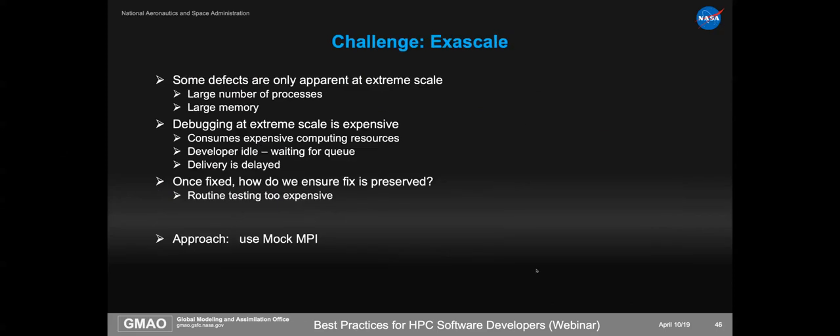Very similar, but with a different emphasis: we want to be able to test things at exascale. This is actually the context in which Hal Finkel suggested mock MPI. Some defects only happen at extreme scale — we'd love for them to show up in smaller tests, but despite our best efforts something different happens at extreme scale. Sometimes we're breaking somebody else's layer; sometimes we just couldn't push the parameter regime enough to exercise the relevant logic. This can be very expensive: the group knows there's a problem, doesn't know what it is yet, has to wait for access to a large number of nodes again, run the application hopefully in the debugger, figure it out, and fix it. And once fixed, how do we make sure a later patch doesn't break it again?